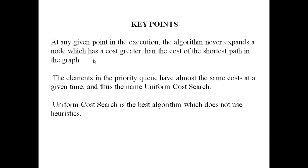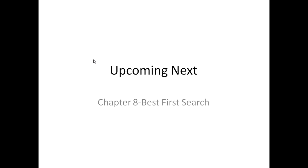The key points about uniform cost search are: at any given point in execution, the algorithm never expands a node whose cost is greater than the cost of the shortest path in the graph. Also, elements in the priority queue have almost the same cost at any given time — that is why it is called uniform cost search. Finally, uniform cost search is the best algorithm when heuristics are not being used.